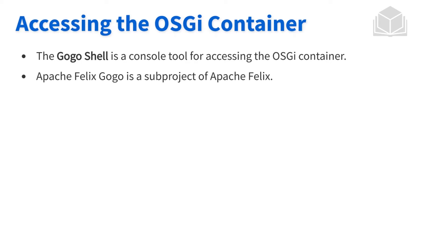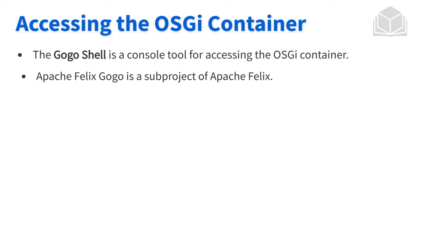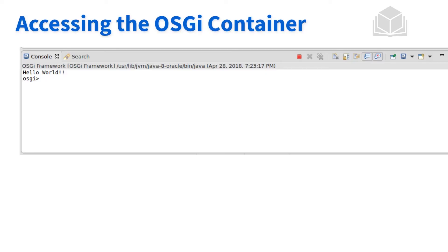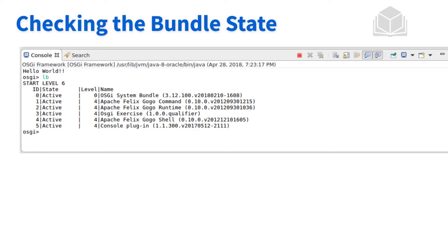There are two big tools that are going to help us with this. One of them is the GoGoShell. The GoGoShell allows us to telnet or connect into the OSGI container and take a peek inside. It's a subproject of Apache Felix, which is the bigger project in Apache's OSGI world. Once connected using the GoGoShell, it allows us to look inside the OSGI container. Typing a specific command like LB allows us to see the bundles that are within the OSGI container.